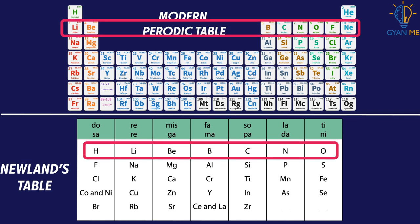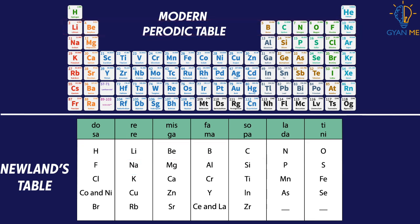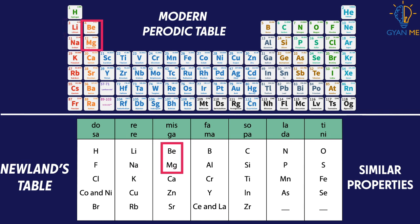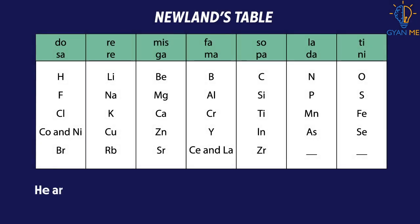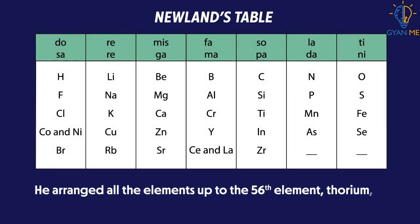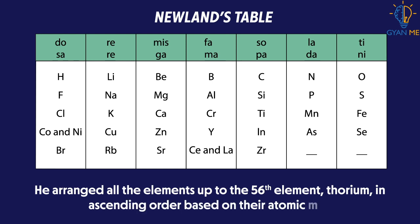He arranged hydrogen, lithium, beryllium, boron, and so on till oxygen, as per the increasing order of their atomic weight. But after that, he broke the line and placed sodium below lithium instead of after oxygen, because he observed that both sodium and lithium had similar properties. Similarly, he placed magnesium below beryllium as they had similar properties, and the pattern continued till calcium under magnesium. He arranged all elements up to the 56th element thorium in ascending order based on their atomic mass.